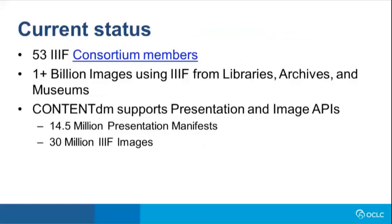The current status of IIIF: it has recently formed into a consortium that organizations can join. OCLC is a member along with 53 other organizations. It's been estimated that there are approximately 1 billion images using IIIF across the libraries, archives, and museums space. ContentDM currently supports the Presentation and Image APIs, with approximately 14.5 million presentation manifests and 30 million ContentDM images across those manifests.